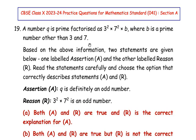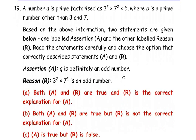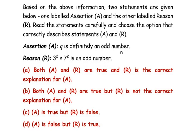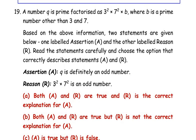This question is from the Real Numbers chapter. A number q is prime factorized as 3² × 7² × b, where b is a prime number other than 3 and 7. Two statements are given — one labeled as Assertion and the other as Reason. The Assertion is: q is definitely an odd number. The Reason is: 3² × 7² is an odd number.